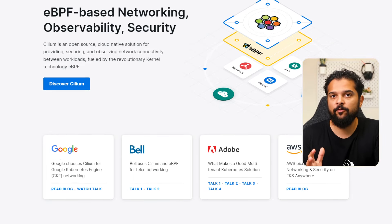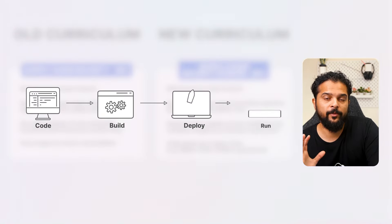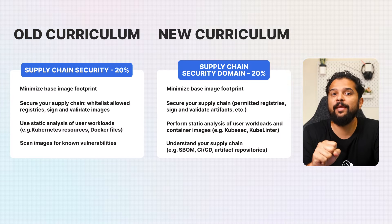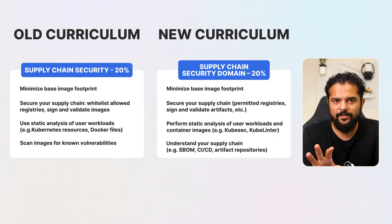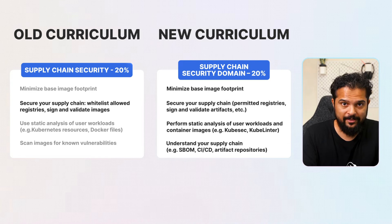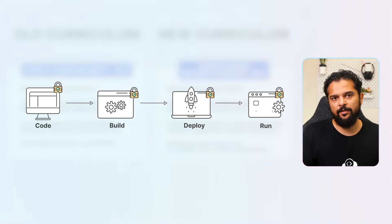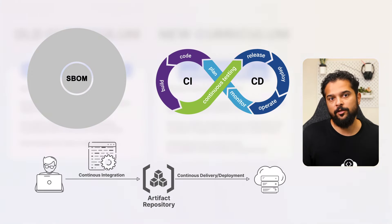Moving on to the supply chain security domain, this aims to protect the entire lifecycle of software components within Kubernetes environments. The weight remains at 20 percent but there are a few changes. Previously, this domain covered practices like minimizing the base image footprint, securing the supply chain by whitelisting allowed registries, signing and validating images, using static analysis tools to inspect Kubernetes resources and Dockerfiles, and scanning images for known vulnerabilities. The curriculum has now been updated to incorporate newer projects from the CNCF ecosystem.